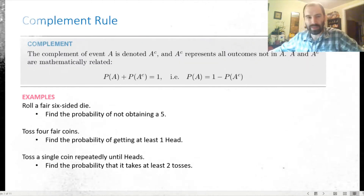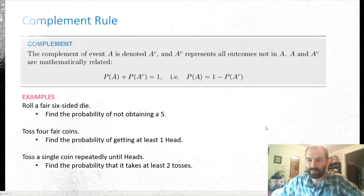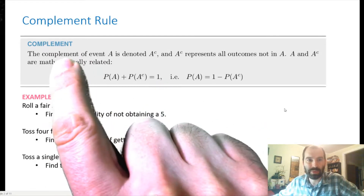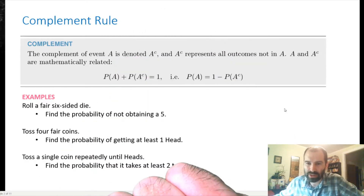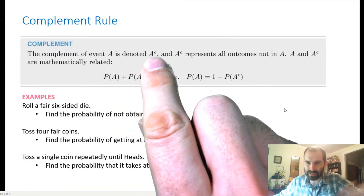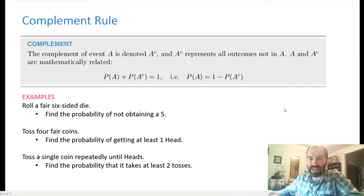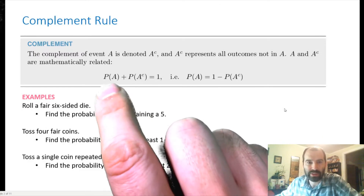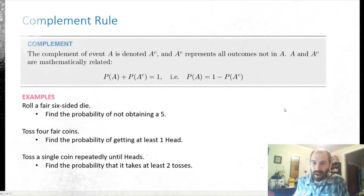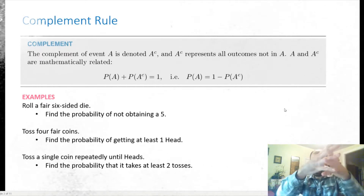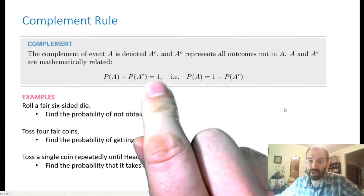The complement rule is useful for computing the probability that something does not occur. The complement of an event is denoted A^c — some books call it A-prime. The complement represents everything not associated with the event, the opposite of the event. The event and its complement are related: the probability of an event plus the probability of its complement equals one, because together they constitute everything.